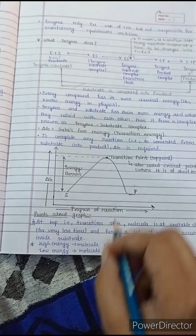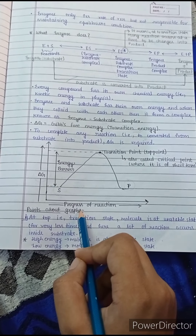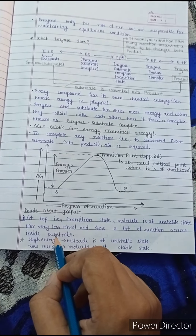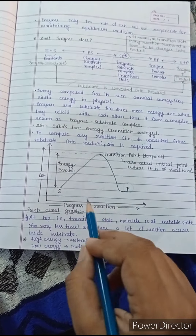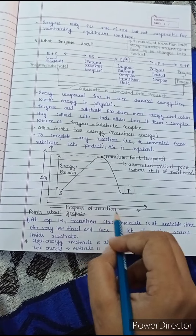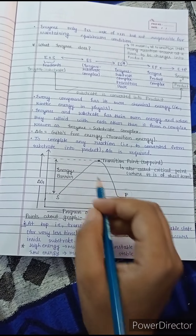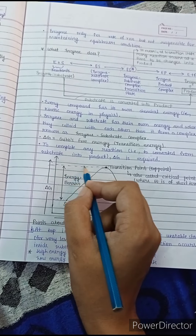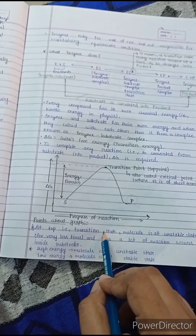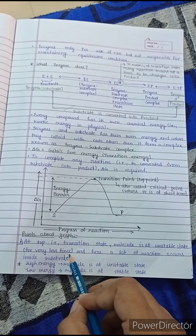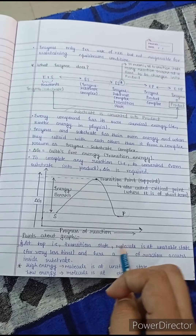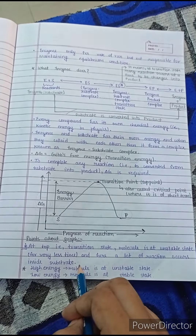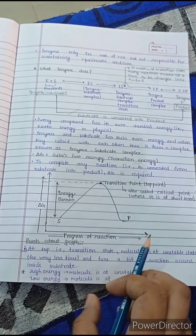Now we will note the key points about the graph. At the transition state, the molecule is in an unstable state for a very short time, and here a lot of reactions occur inside the substrate. At the transition point, molecules are in an unstable state because the Gibbs free energy here is very high — that is why molecules remain there for only a very short time.